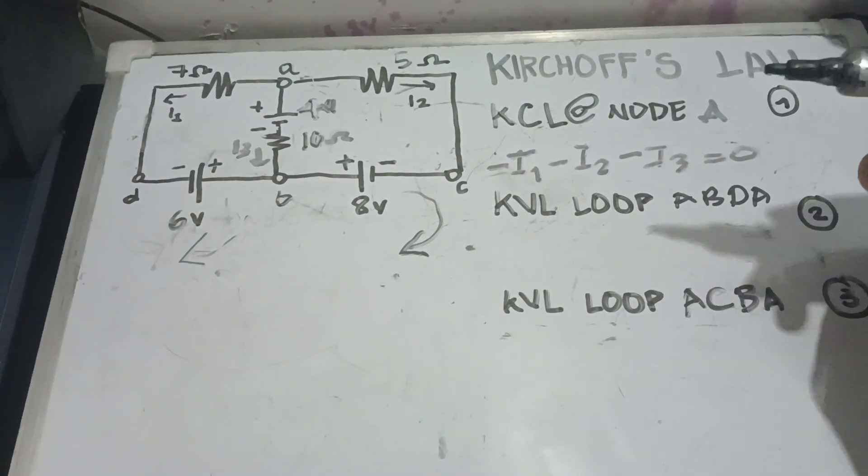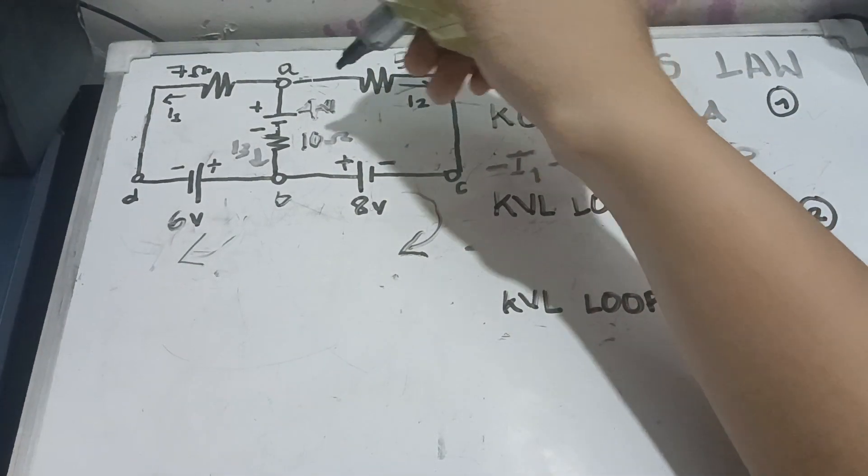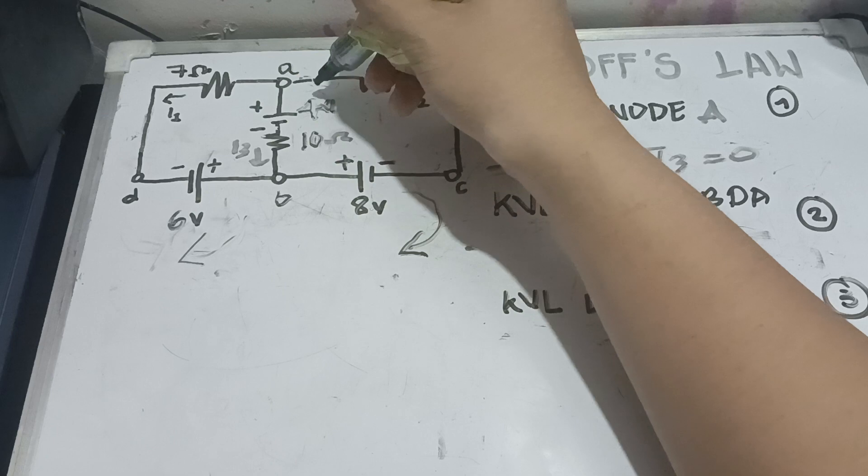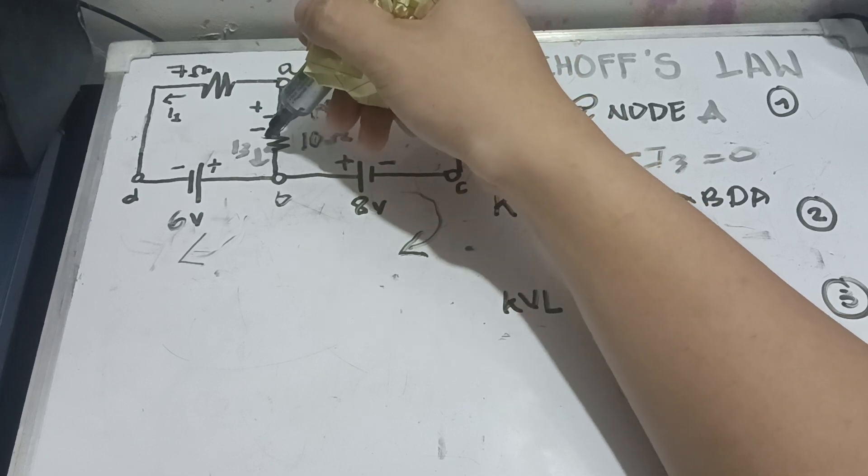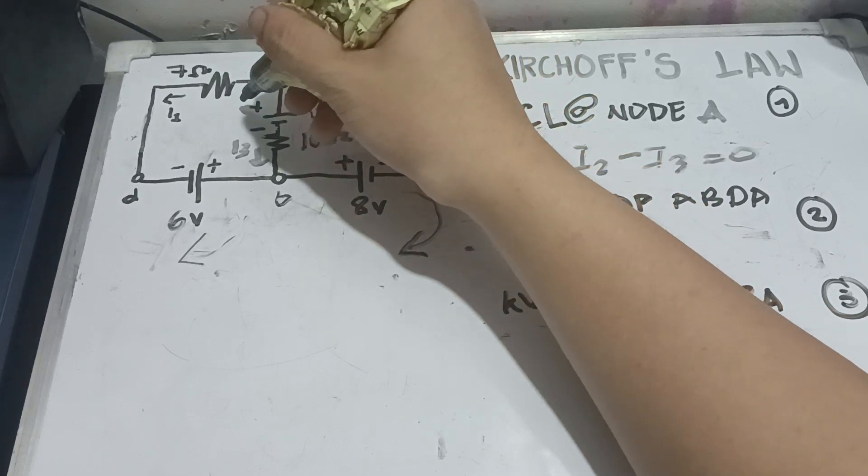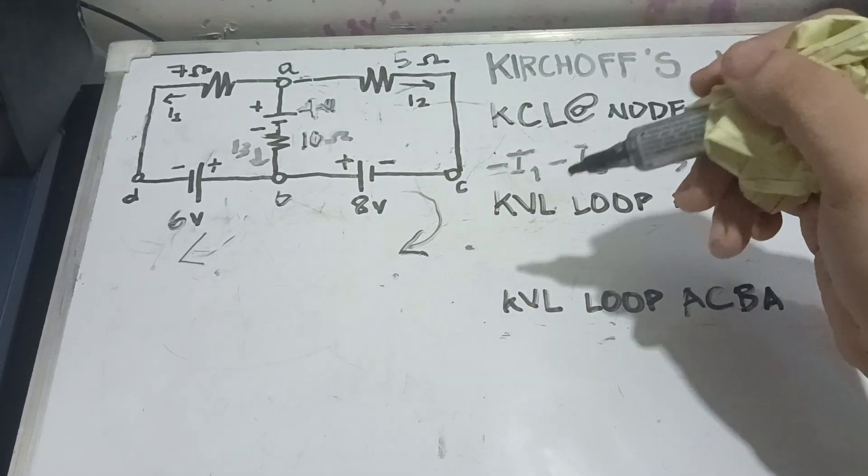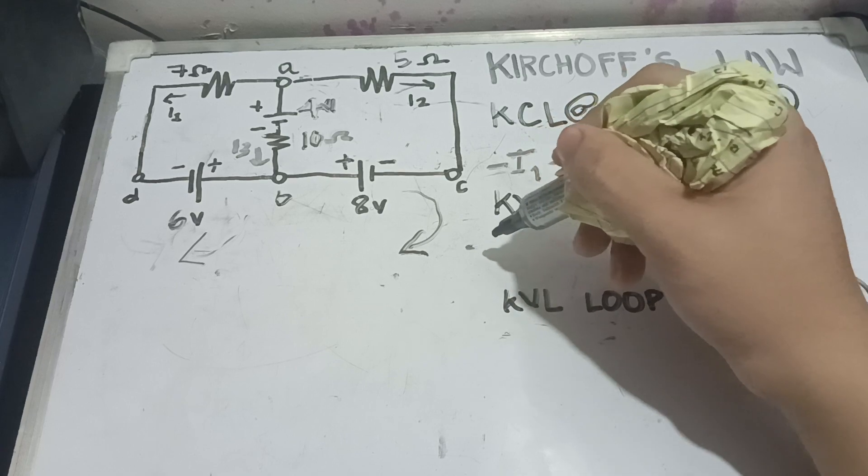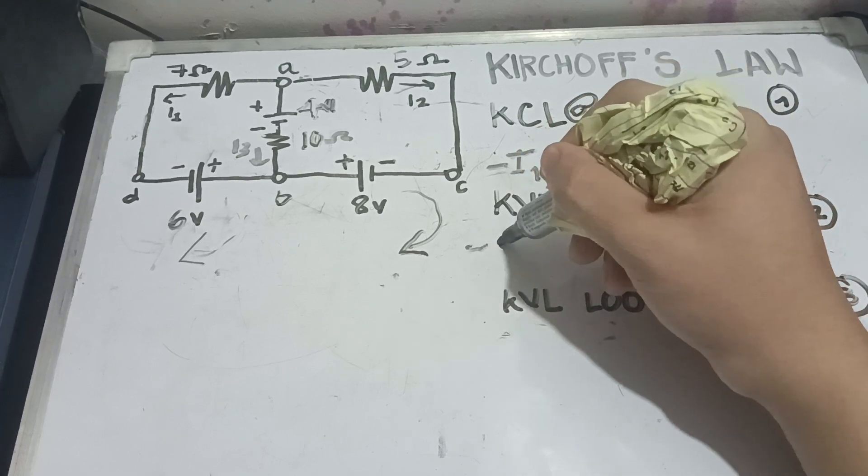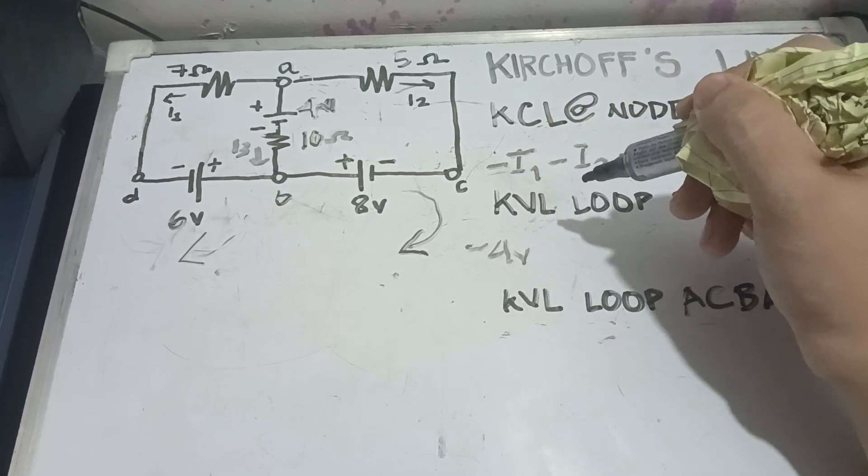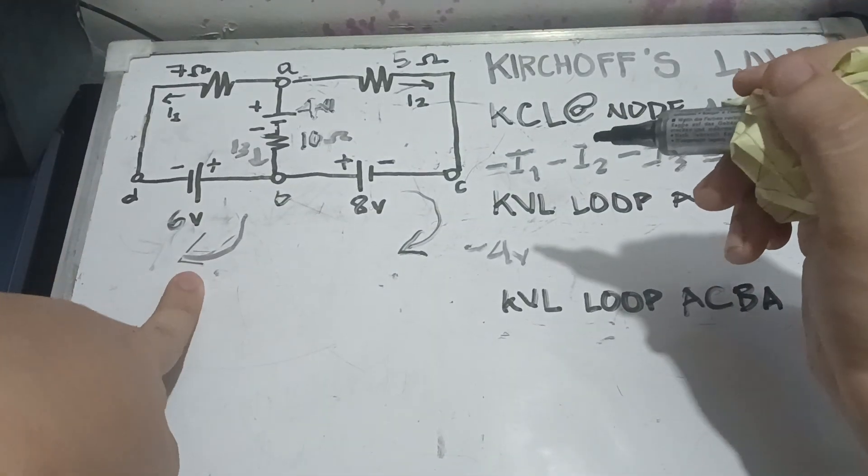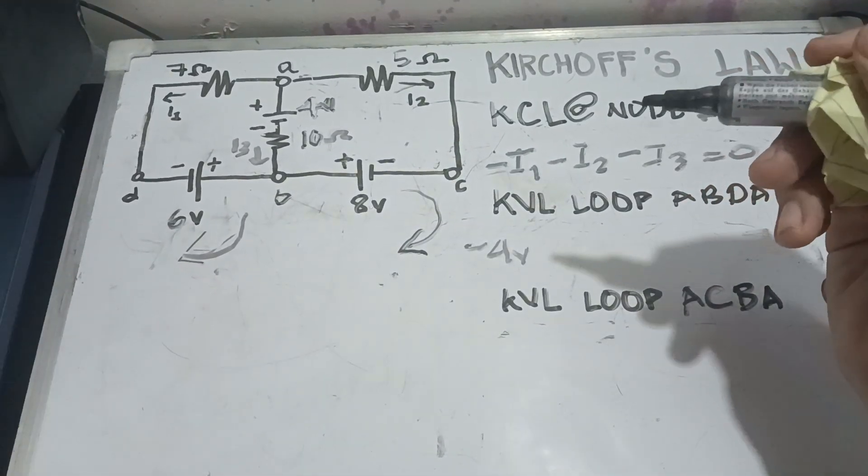Now, let's start with our 4 volts battery from the positive part going to the negative part. It means from positive to negative, there is a voltage drop in our electricity or in our voltage. So, we're going to write it as negative 4 volts. By the way, we are going in a clockwise direction.